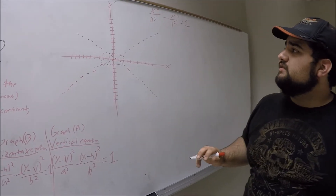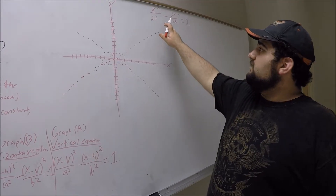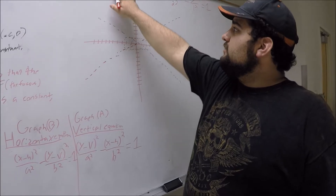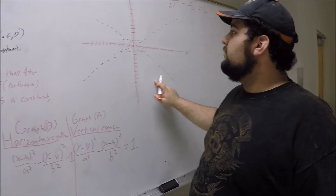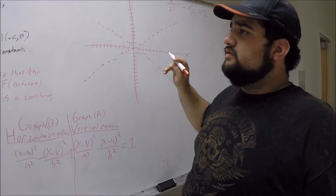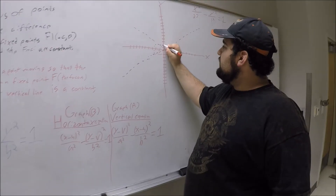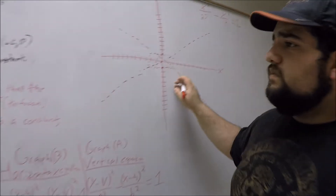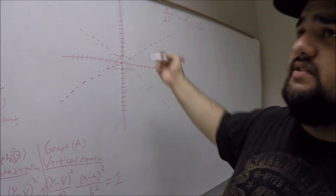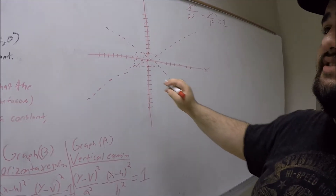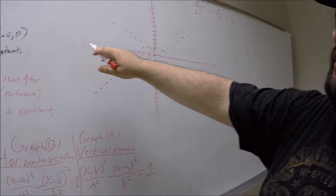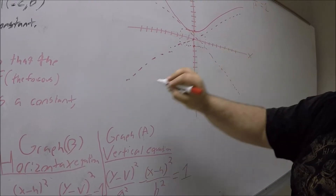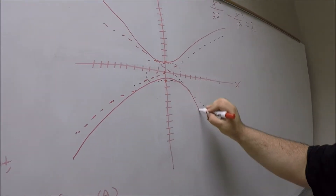A hyperbola consists of two branches — open curves produced by the intersection of a circular cone and a plane that cuts both nappes of the cone. The definition of a hyperbola is the set of points P(x, y) such that the difference of the distances from P to the two fixed foci F1 and F2 is constant. A simpler definition: the path of points moving so that the ratio of distance from a fixed point F to the distance from a fixed directrix line is a constant greater than 1.